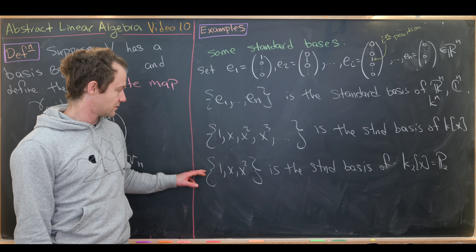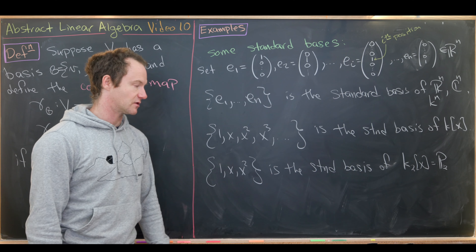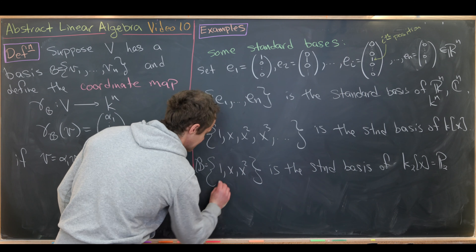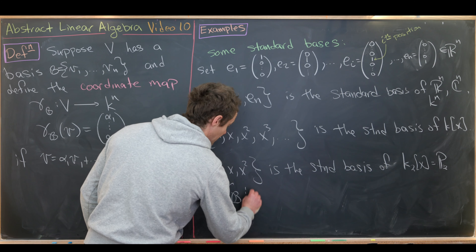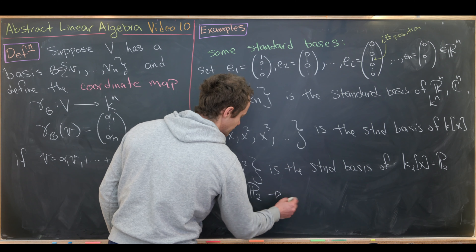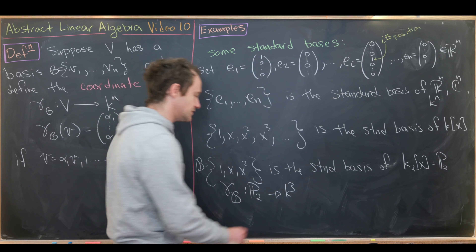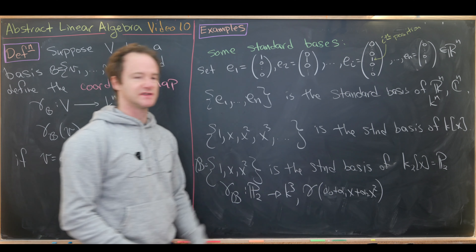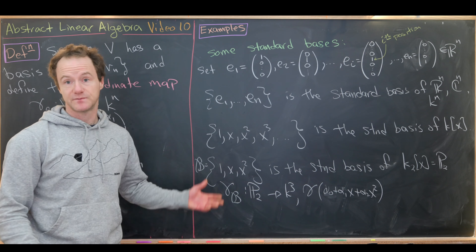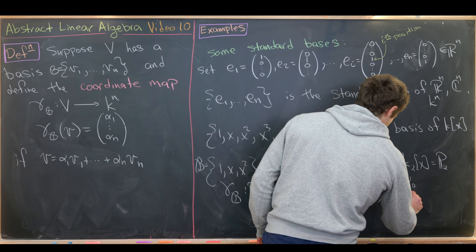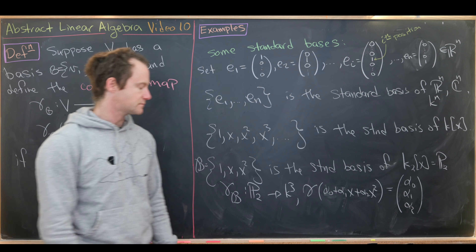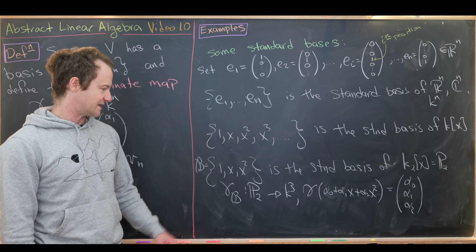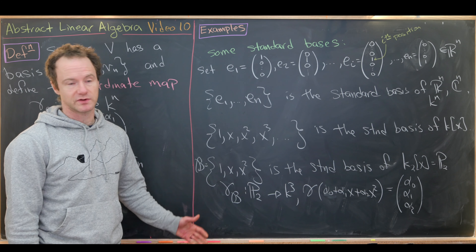For example, with the standard basis B = {1, x, x²} for P_2, the coordinate map gamma_B goes from P_2 to K^3. It takes a polynomial alpha_0 + alpha_1·x + alpha_2·x² and maps it to the column (alpha_0, alpha_1, alpha_2). This gives a natural relation between the polynomial space and triples.